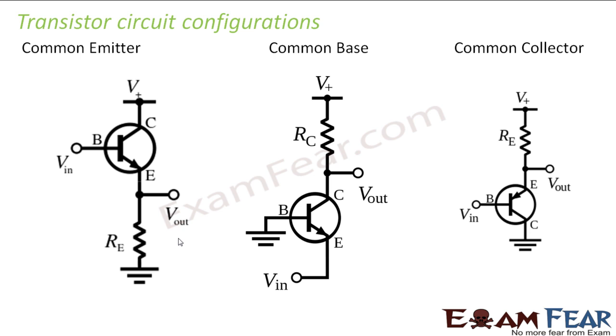Now when we connect a transistor in a circuit, there are three ways in which we can connect the transistor in circuit. So these different ways are known as transistor configurations.